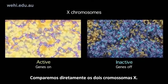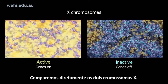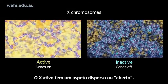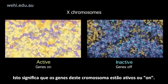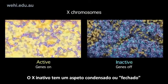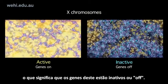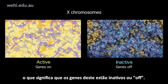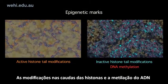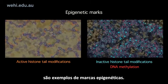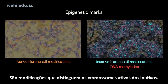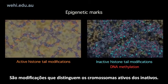Let's compare the two X chromosomes directly. The active X has a dispersed or open appearance, meaning the genes on this chromosome are active or on. The inactive X has a condensed or closed appearance, meaning that the genes on this chromosome are inactive or off. Histone tail modifications and DNA methylation are examples of epigenetic marks — modifications that distinguish between the active and inactive chromosomes.